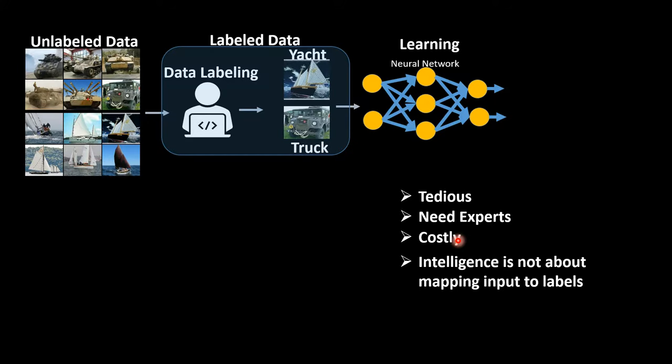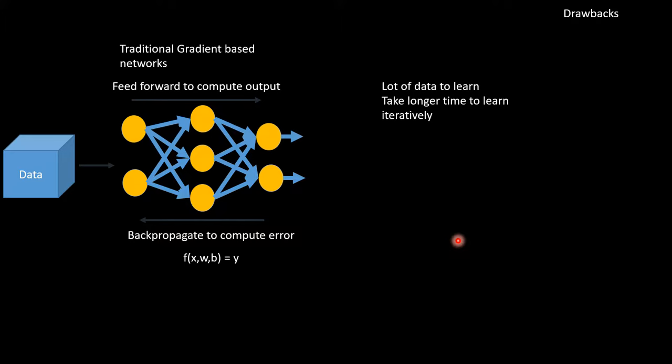These are a few drawbacks. What happens in traditional gradient descent approach is we'll have data, we'll have this feedforward and it will do the computation. But the drawback, as I mentioned already, is it takes a lot of data to learn and it takes longer time because in the backpropagation if you're using gradient descent, it trains iteratively.